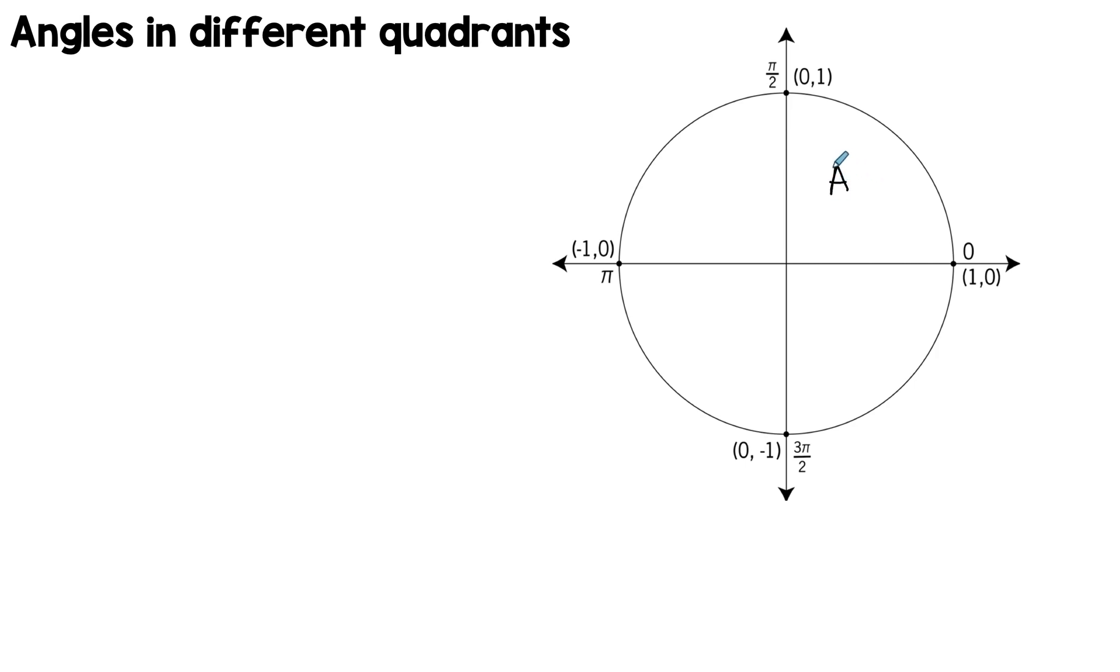All of them are positive. Whatever angle you're going to take between 0 to 90 degrees, your sine is positive, your cosine is positive, your tangent is positive.